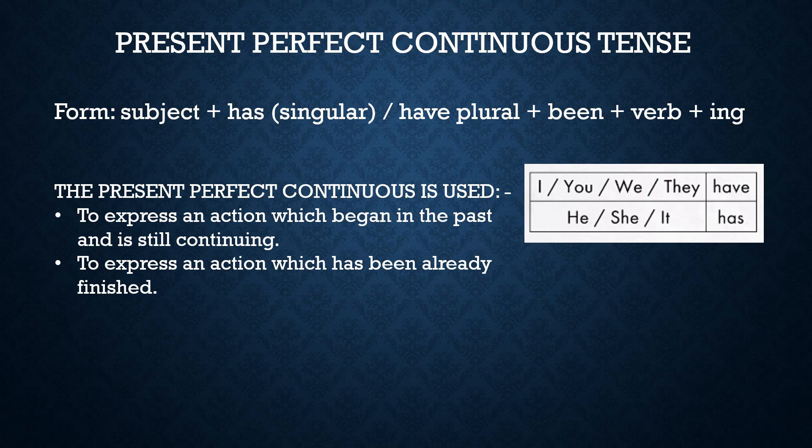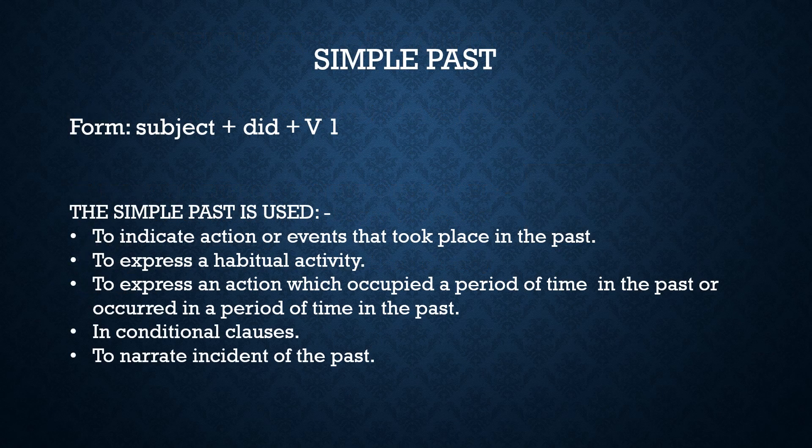The present perfect continuous is used to express an action which began in the past and is still continuing — for example: 'It has been raining since morning,' 'He has been living here for 10 years.' It is also used to express an action which has already finished — for example: 'He has been watering the plants, that is why his clothes are wet,' 'I have been working all day, that is why I look so tired.'